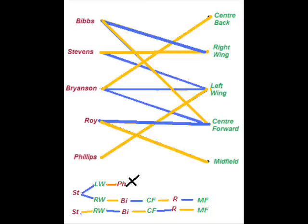Finding a route from one unmatched vertex on one side to another unmatched vertex on the other side is called Breakthrough.